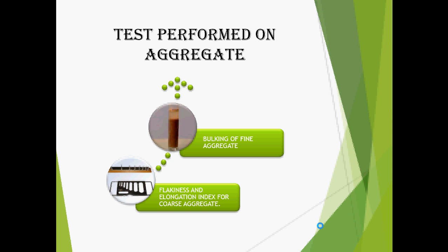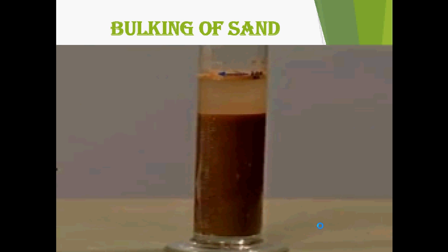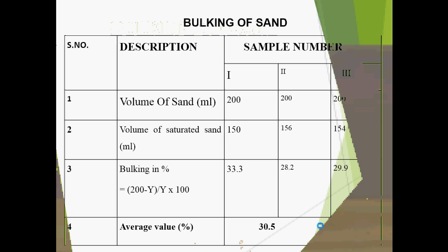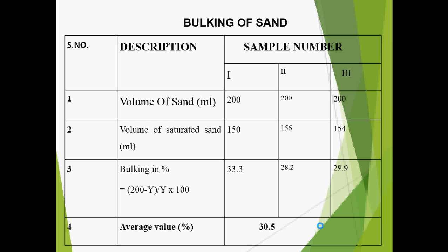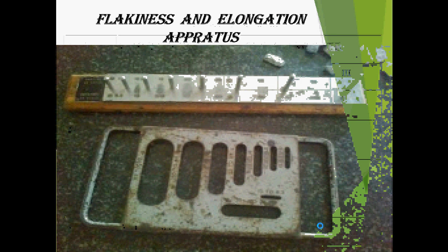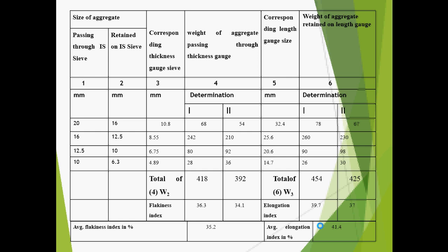Two tests were performed on the aggregates: bulking of aggregate and flakiness and elongation index. The average value of bulking of sand was 30.5 percent. The flakiness index was 35.2 percent and elongation index was 41.4 percent.